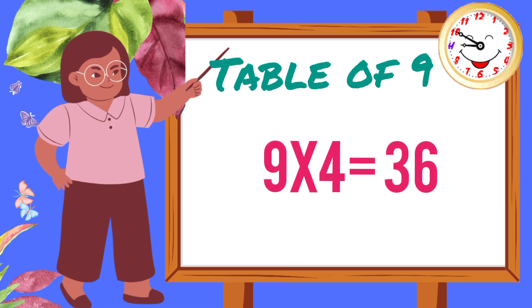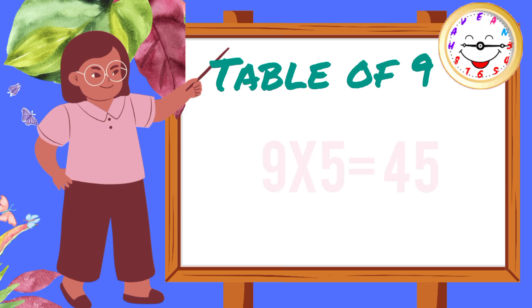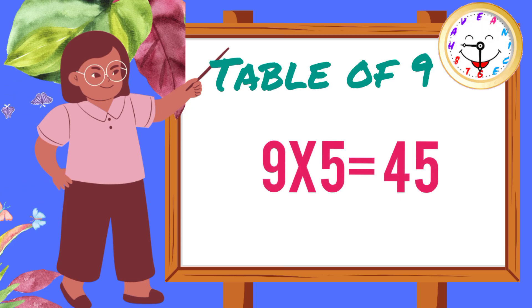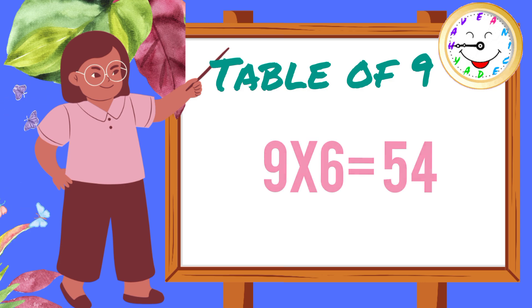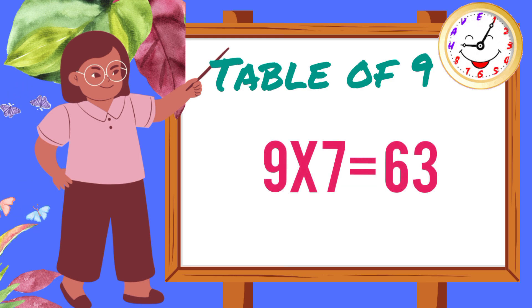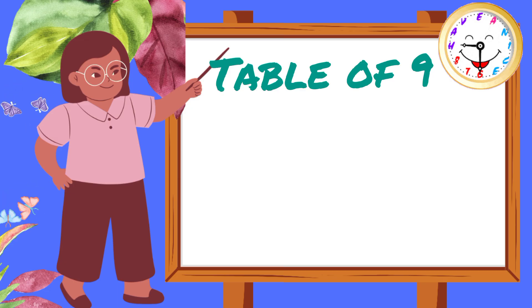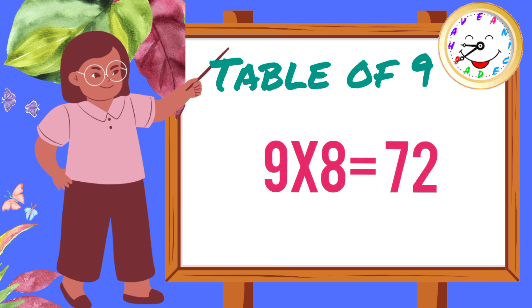Nine fours are thirty-six. Nine fives are forty-five. Nine sixes are fifty-four. Nine sevens are sixty-three.